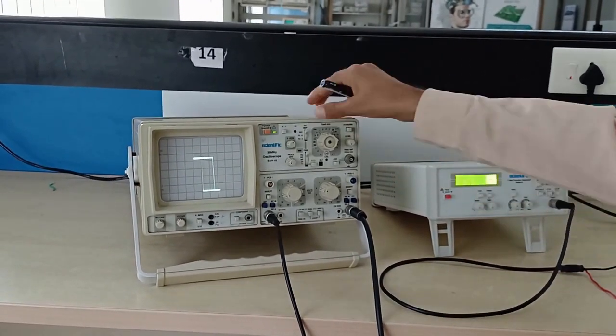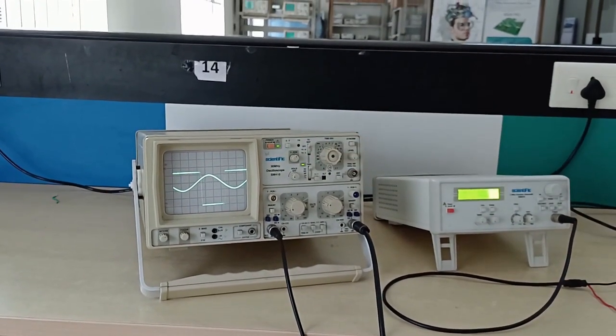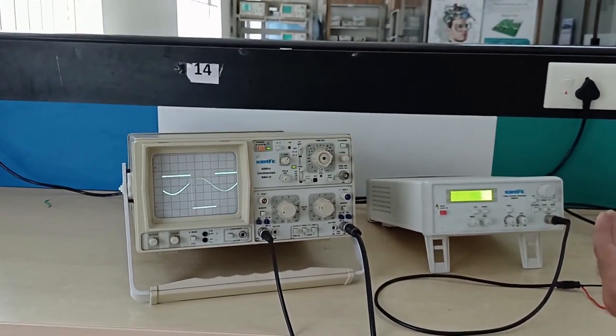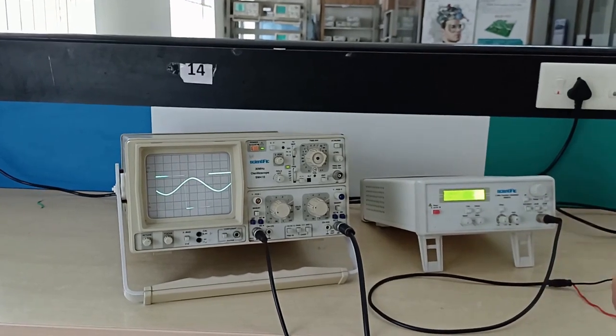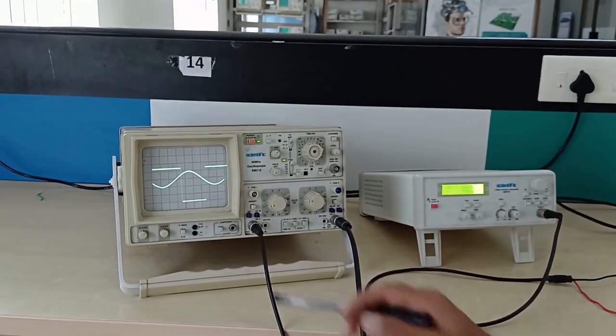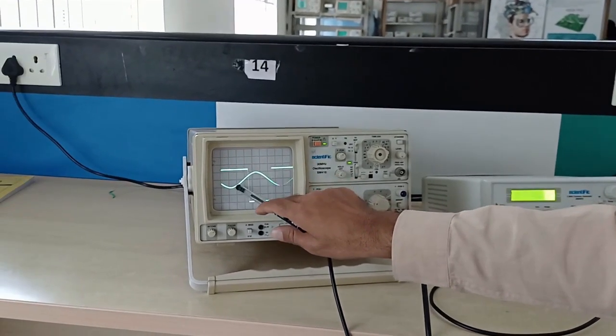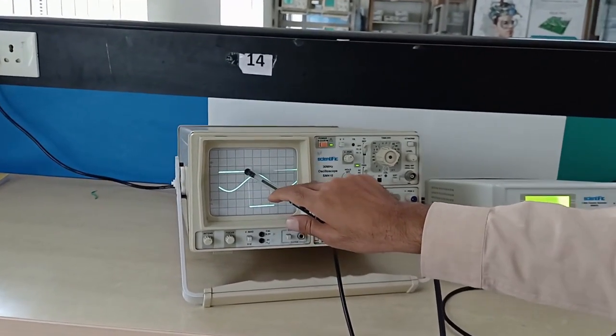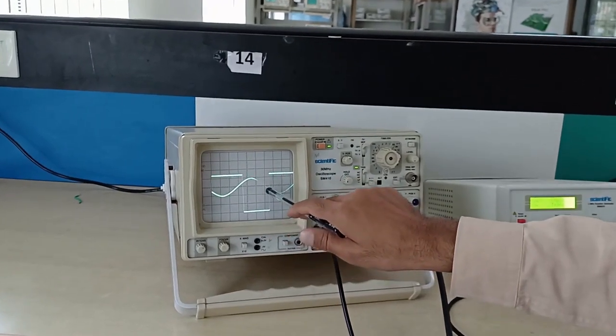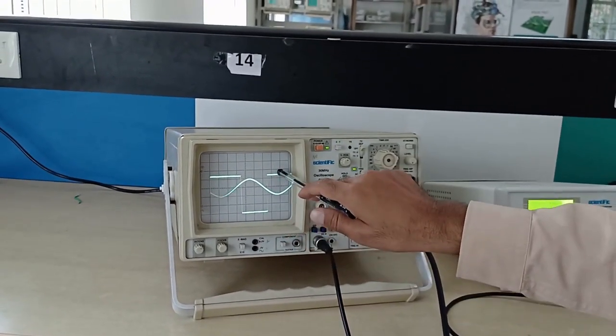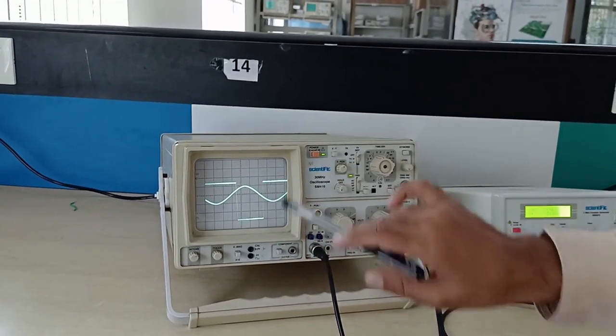Using Schmitt trigger we can find out the output voltage, the square waveform, and the UTP and LTP values could be set. Whenever the input signal reaches UTP, the output Vsat is switched to negative. And whenever it reaches LTP, it is switched from minus Vsat to plus Vsat for an inverting Schmitt trigger.